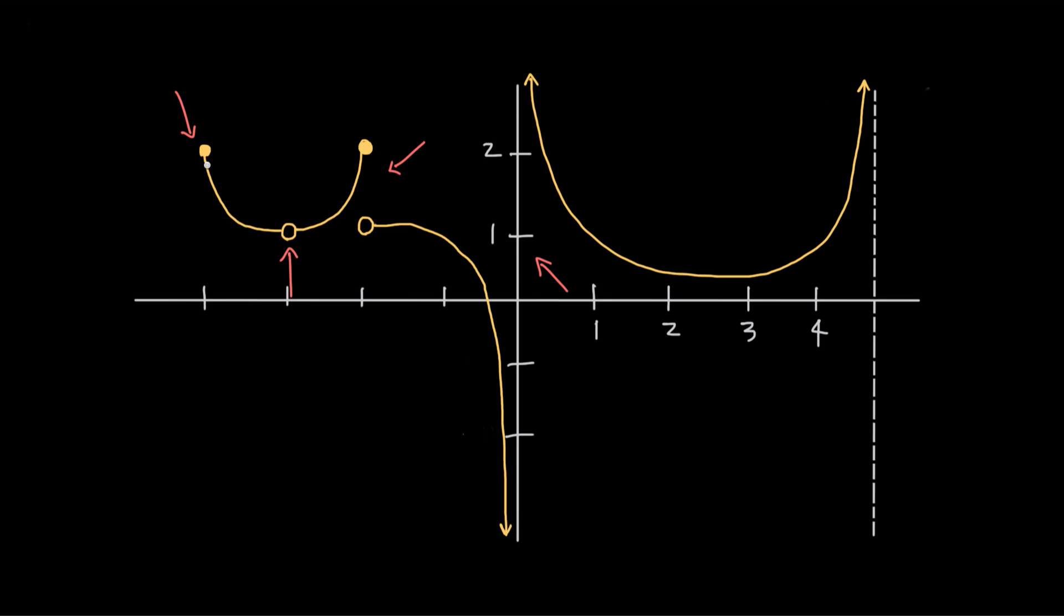When you're tracing the graph from one side to the other, if you ever come to any point where you have to pick up your pencil in order to keep drawing the next section, then there's a discontinuity at that point.